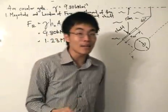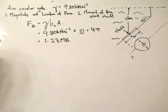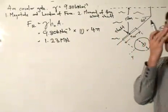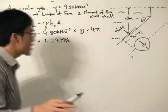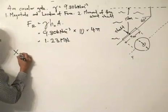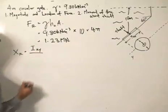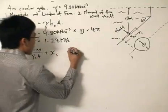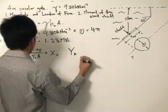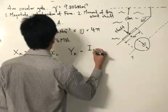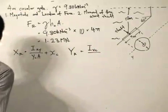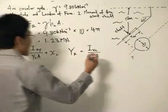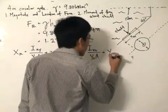Now for the location of the force — this is where things get a little bit interesting and require some calculations. The location of the force is given by the center of pressure. The center of pressure is given by two formulas relating the moment of inertia and the product of inertia. xR equals the product of inertia divided by (yC times area) plus xC. And yR equals the moment of inertia about the x-axis passing through the centroid, divided by (yC times area), plus yC.